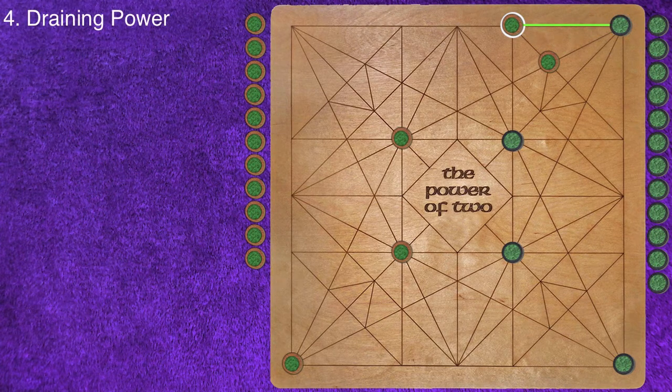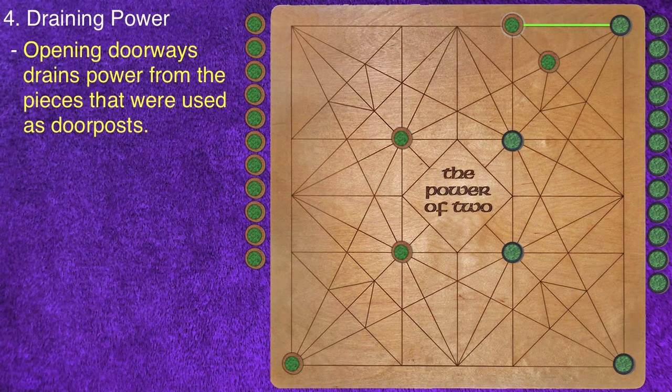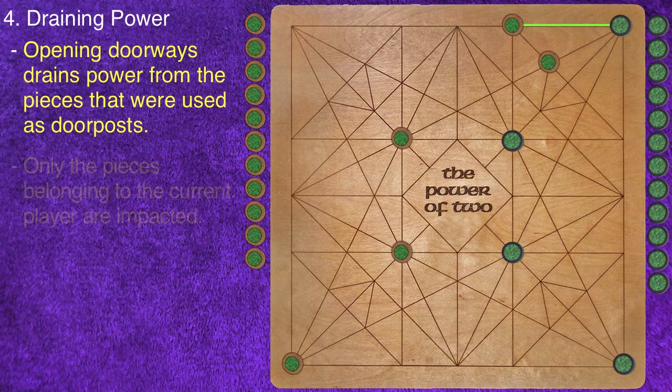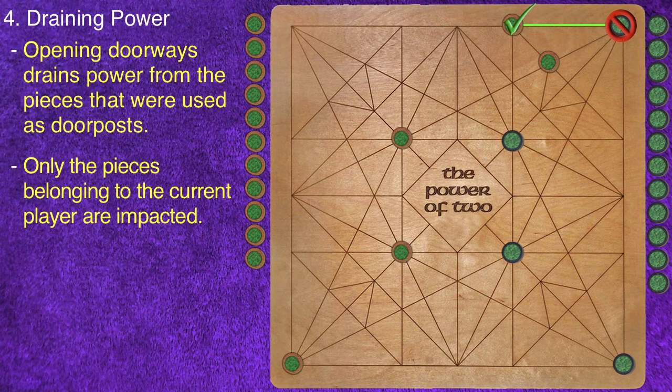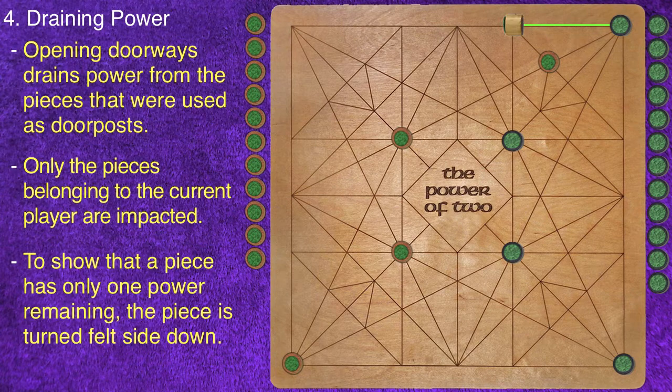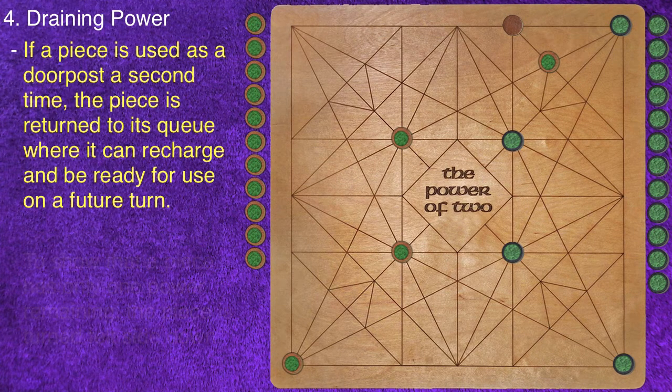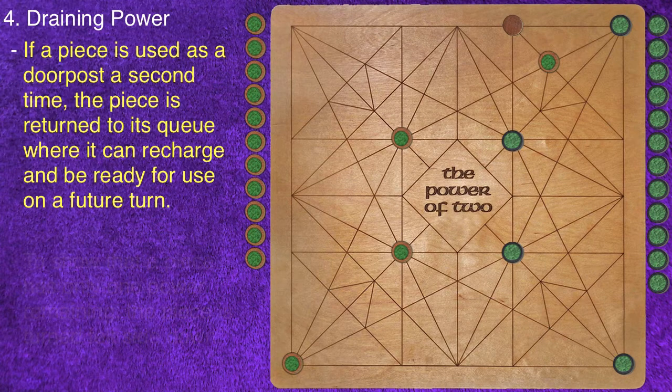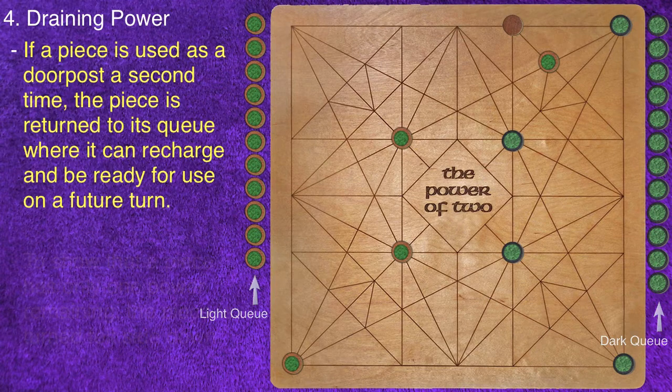Step 4: Draining Power. Opening doorways drains power from the pieces that were used as doorposts. Only the pieces belonging to the current player are impacted. To show that a piece has only one power remaining, the piece is turned felt side down. Should a piece be used as a doorpost a second time, the piece will return to its queue so it can recharge and be brought back into play on a future turn.